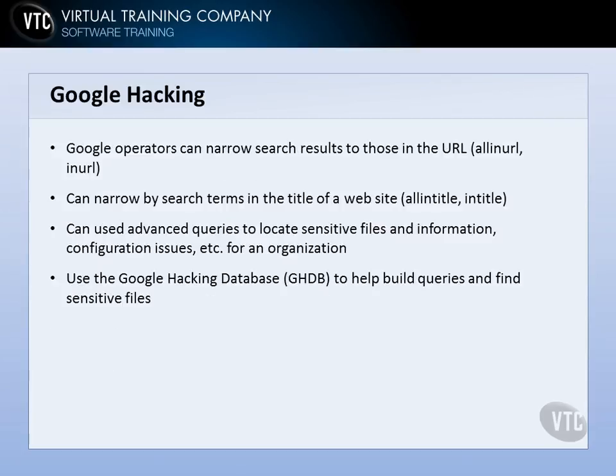You're using these operators to narrow search results down. There's allinurl and inurl. Allinurl means every single term you've typed in the search — you want every single URL that has all of those terms. You can also narrow it down to just some of those terms by using inurl. For example, if I said vtc.com, it would find all the pages that had vtc.com in the URL.